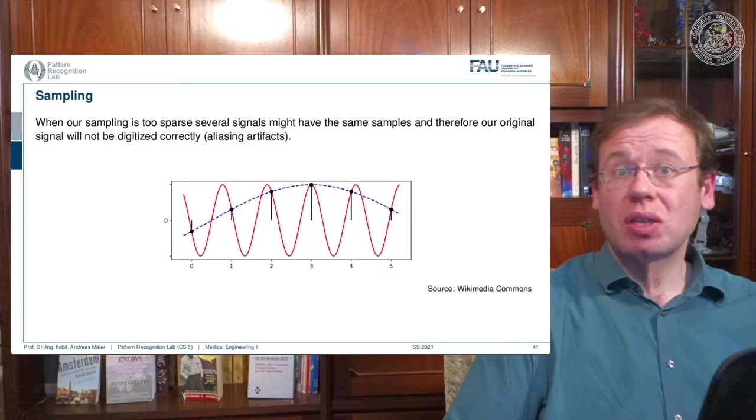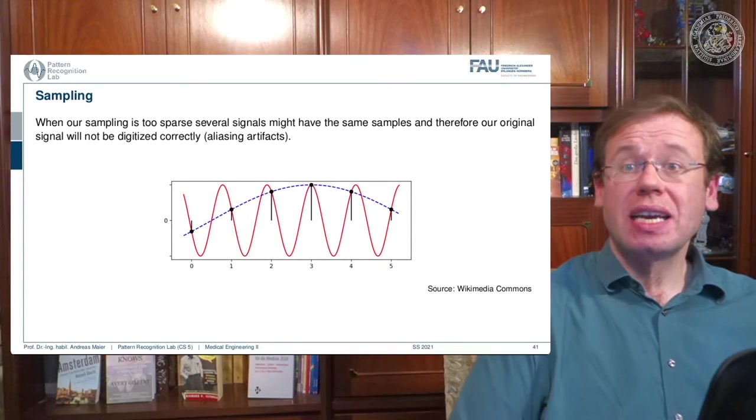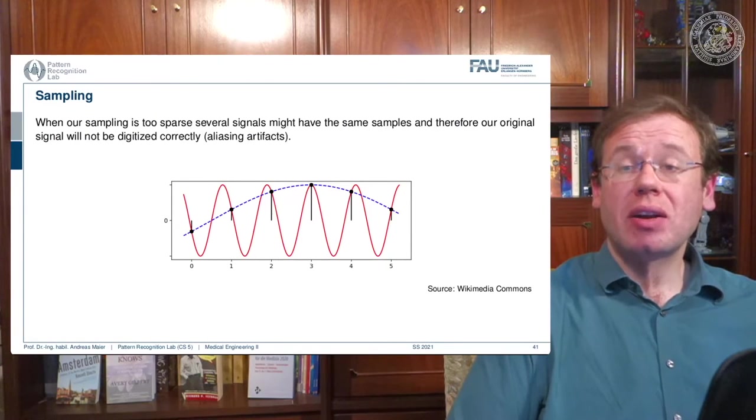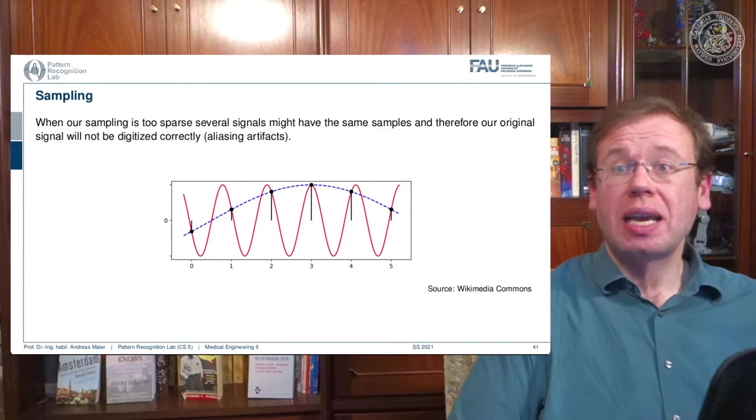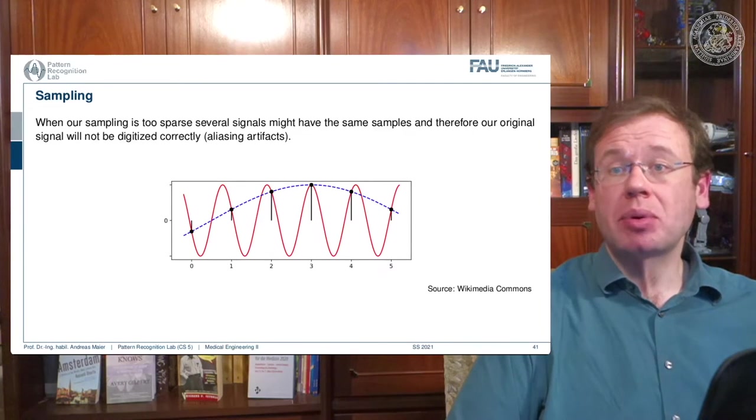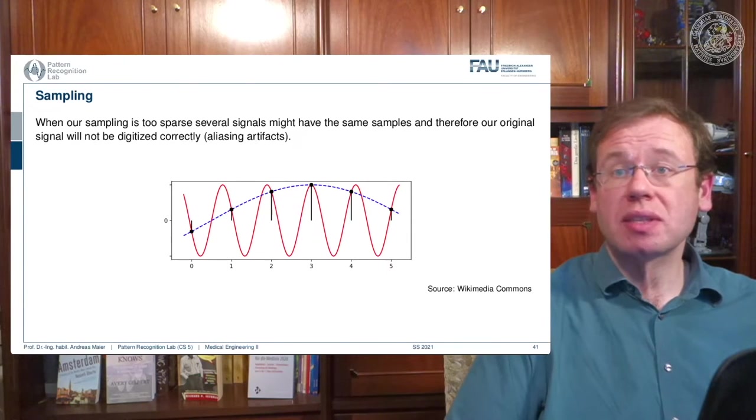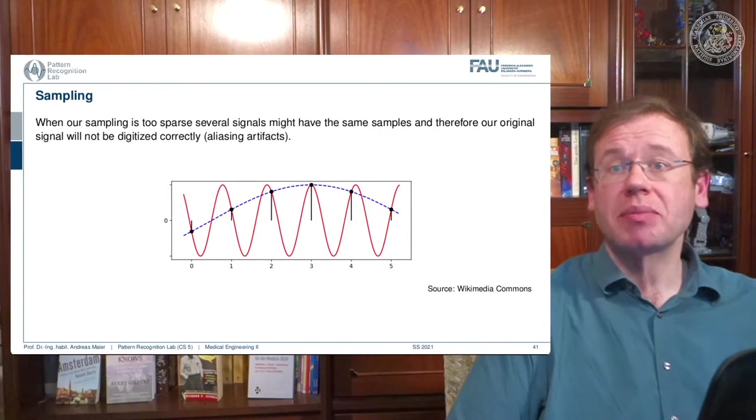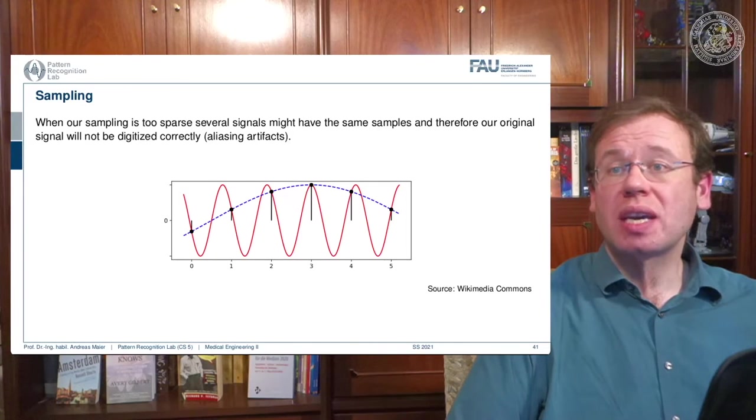This is what I want to show you guys here in this plot. So here I have an input signal and this is the red curve. And now I decide to sample at the black dots. And you see that I chose them at some arbitrary spacing. And what you can see in this example is, I always have the same distance between the black dots.